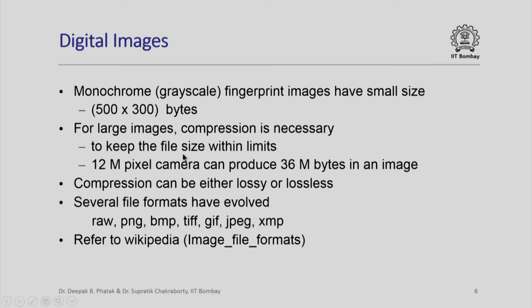Remember that a 12 megapixel camera means in a single frame it can capture 12 megapixels. Since each pixel can be three bytes in color, a single picture can be 36 megabytes in size. In order to reduce this size without losing quality, there are compression techniques that have been discovered. The compression can be either lossy or lossless. We will not go into those details except to note that there are several file formats which have evolved to represent images of different types.